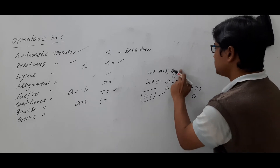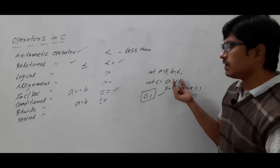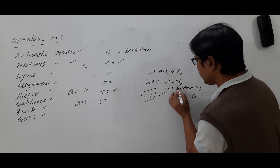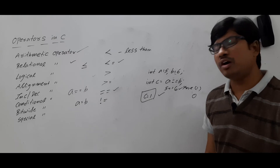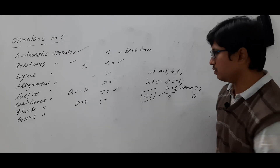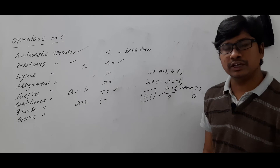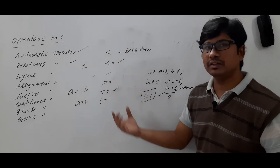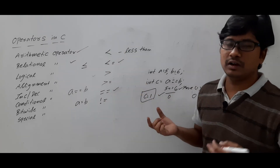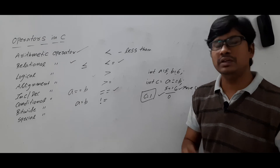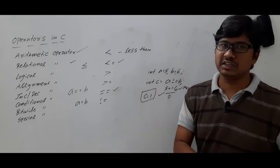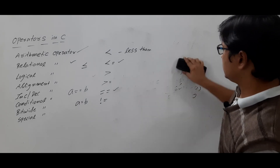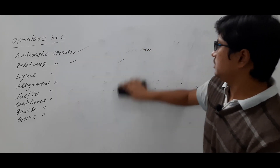Since a == b means 5 is equal to 5, this will give result as 1, so the variable c will be assigned the value 1 and you will get output as 1. Suppose if b value is 6, and you compare a == b, then 5 is not equal to 6, so it is false and you will get the value 0 assigned to c. This is about the relational operators — they are useful for comparing two things, giving 1 for true and 0 for false.